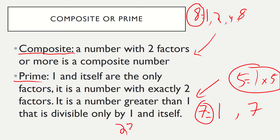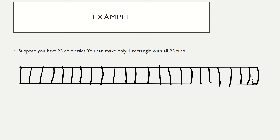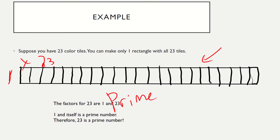Let's take 23. We might think maybe three would go into 23, but it doesn't — it is not a multiple of three. One times 23 are the only factors that can multiply to get 23. We have 23 color tiles and we can only make one rectangle: one row and 23 columns. So one times 23 equals 23 — this is an example of a prime number. The factors of 23 are one and 23, so 23 is a prime number.